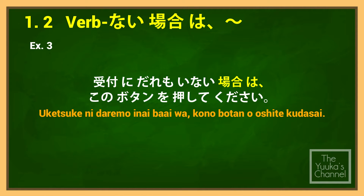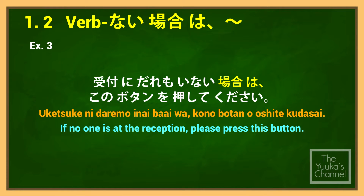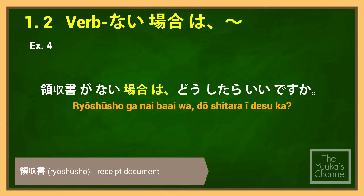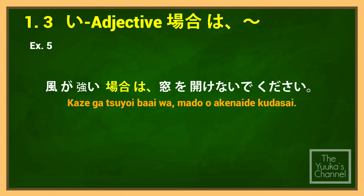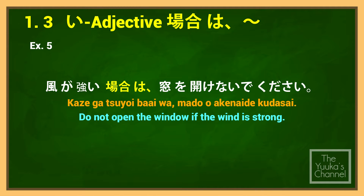受け付けに誰もいない場合はこのボタンを押してください — If no one is at the reception, please press this button. 領収書がない場合はどうしたらいいですか？ — What should I do if I don't have a receipt? 風が強い場合は窓を開けないでください — Do not open the window if the wind is strong.